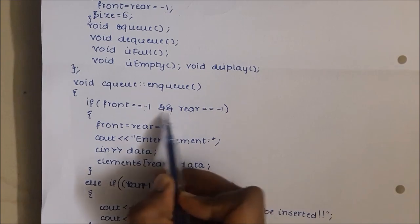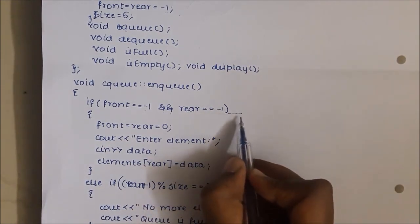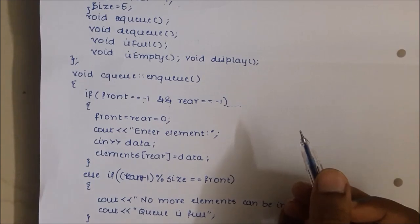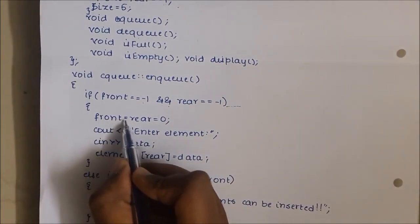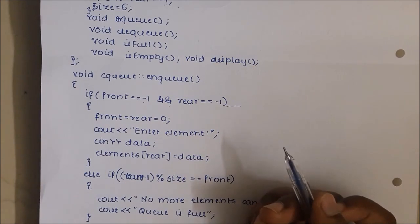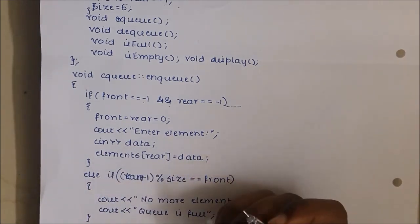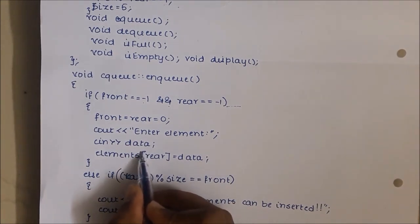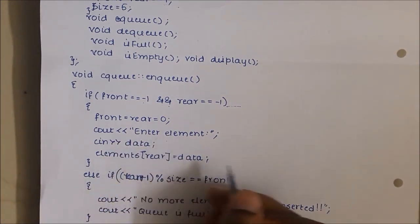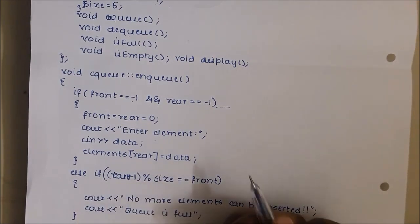This condition — if front equals minus 1 and rear equals minus 1 — checks if the queue is empty. If the queue is empty, the element being inserted is the first element. The first element is always inserted at index 0, so we assign 0 to front and rear. Front and rear now point to index 0. We accept the element in the variable data, and since we always enqueue from the rear side, elements[rear] = data stores the value at index 0.